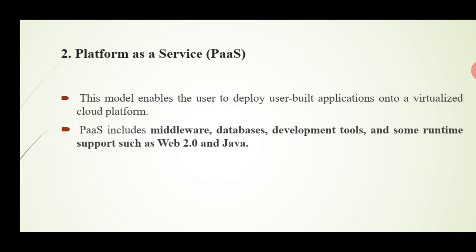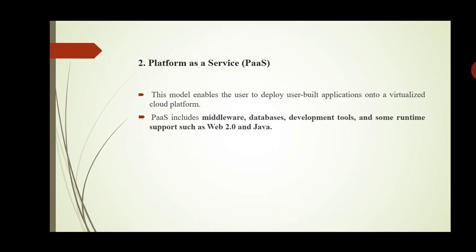Platform as a Service includes middleware — a collection of software — databases for storing records, development tools, and runtime support such as web services and Java. Key features include: it provides a platform with tools to test, develop, and host applications in the same environment; it enables organizations to focus on development without worrying about underlying infrastructure; it provides managed security, operating systems, server software, and backups; and it facilitates collaborative work even if teams work remotely.